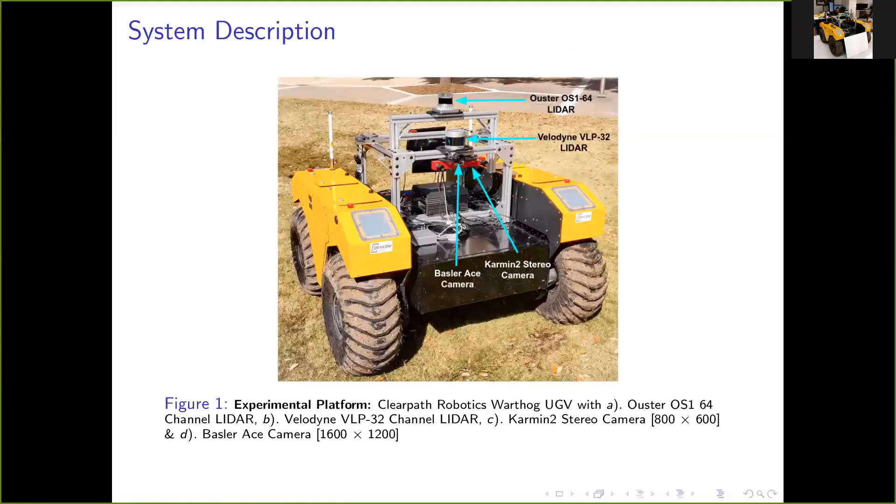This picture shows the sensor suite we have used to compare the performance of all the algorithms. We have two different LIDARs, namely the Ouster 64 channel LIDAR and Velodyne VLP 32 channel LIDAR, and three different cameras out of which two form a stereo pair, such that the factory stereo calibration is known and it can be used as ground truth.